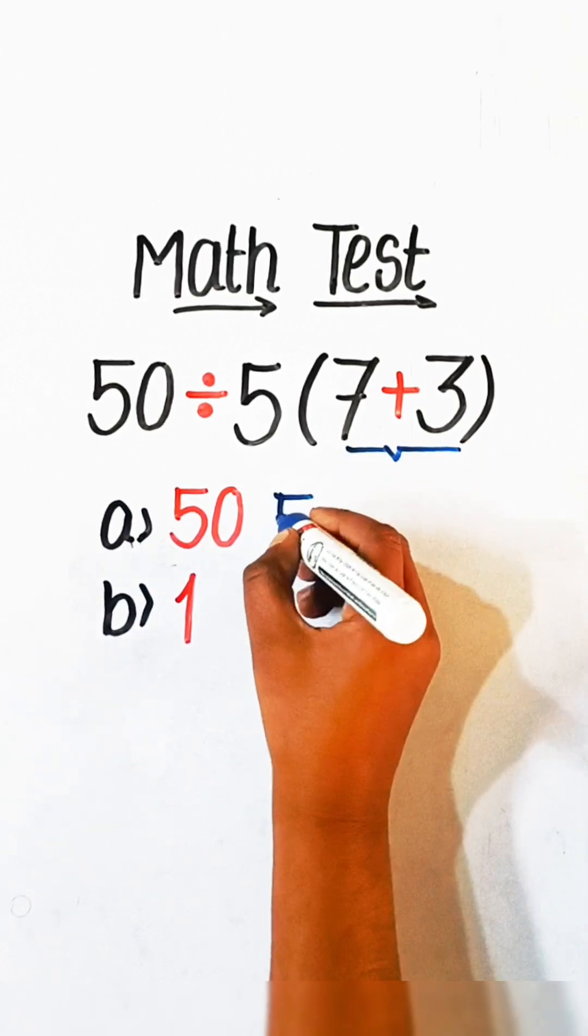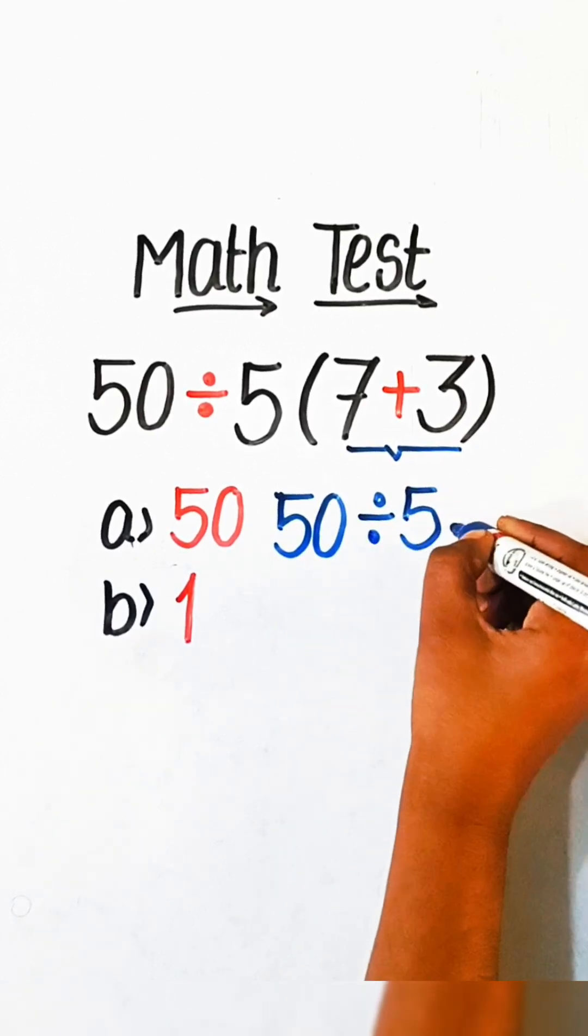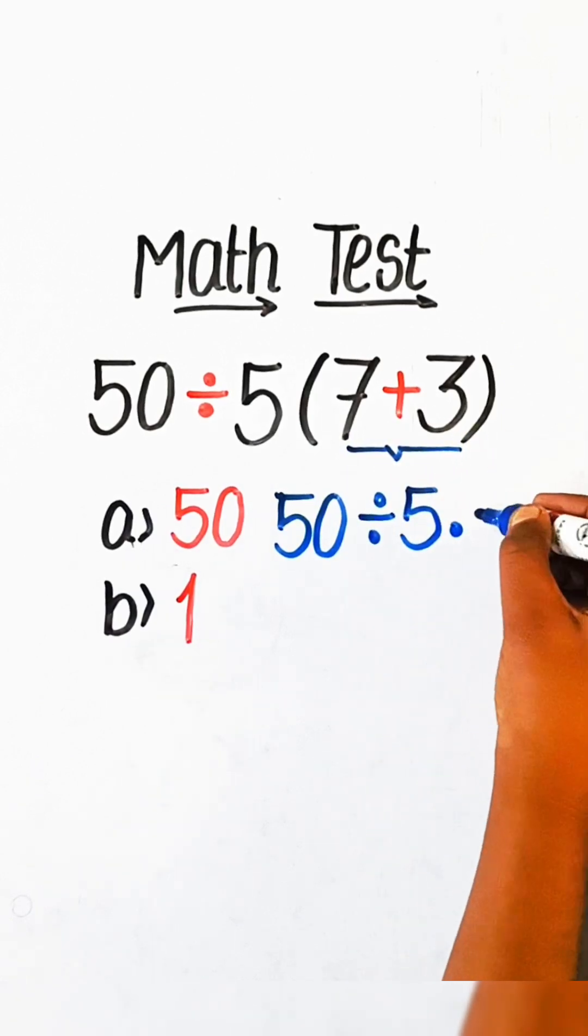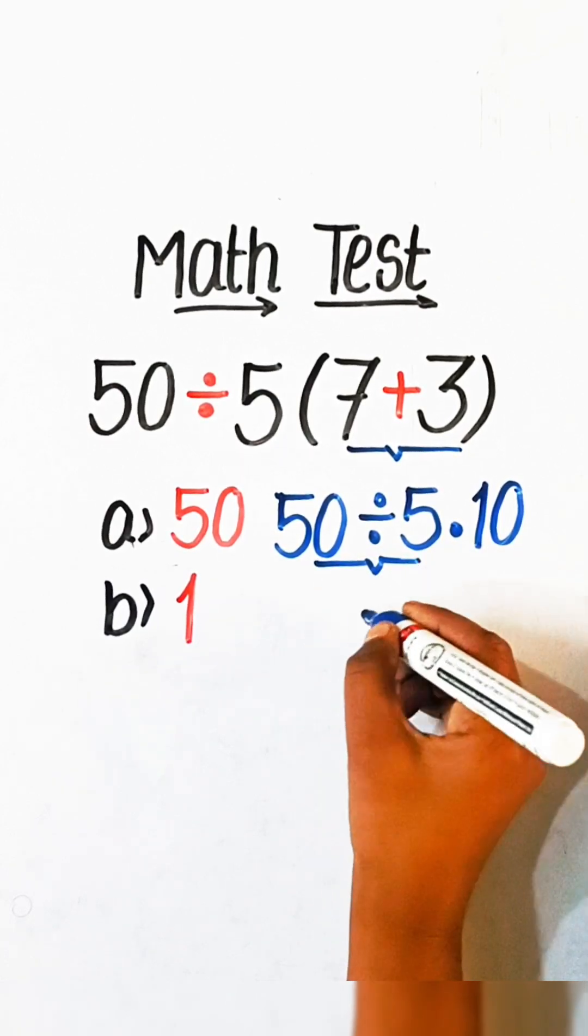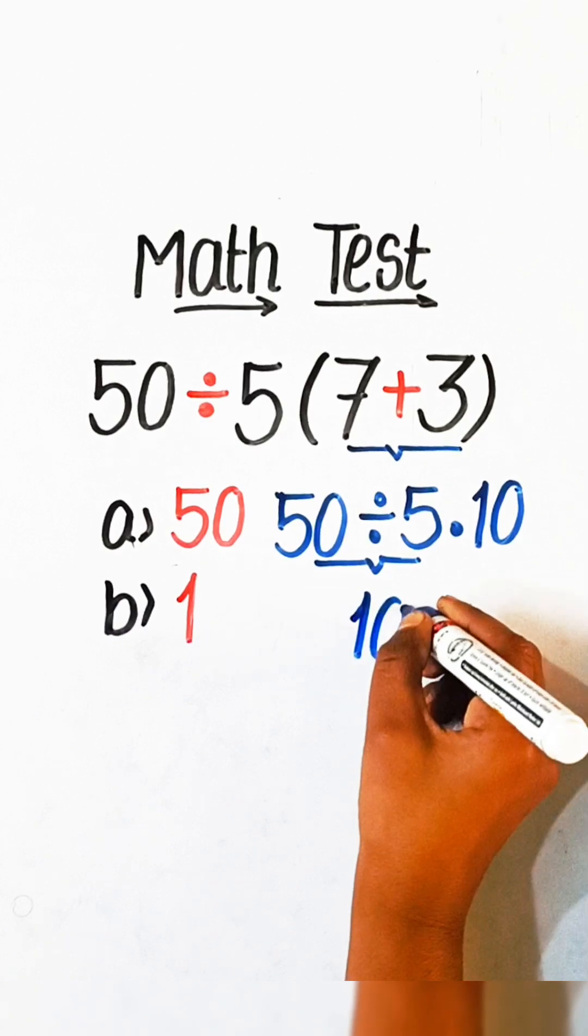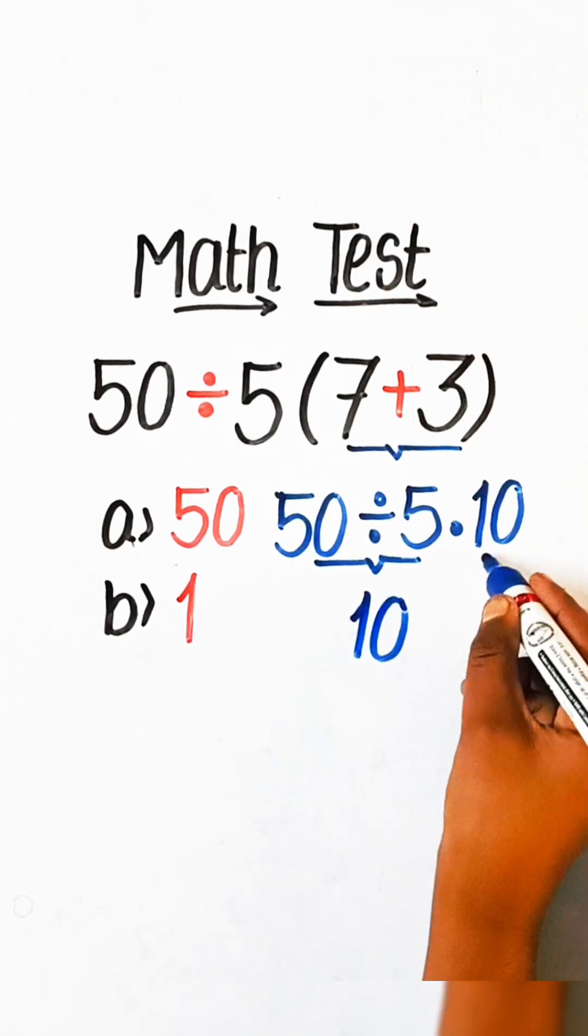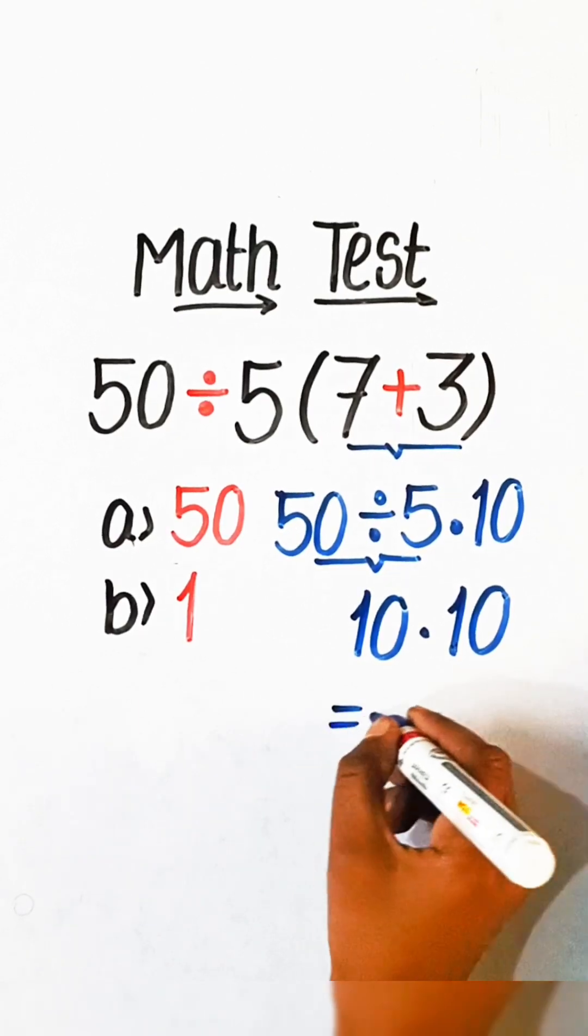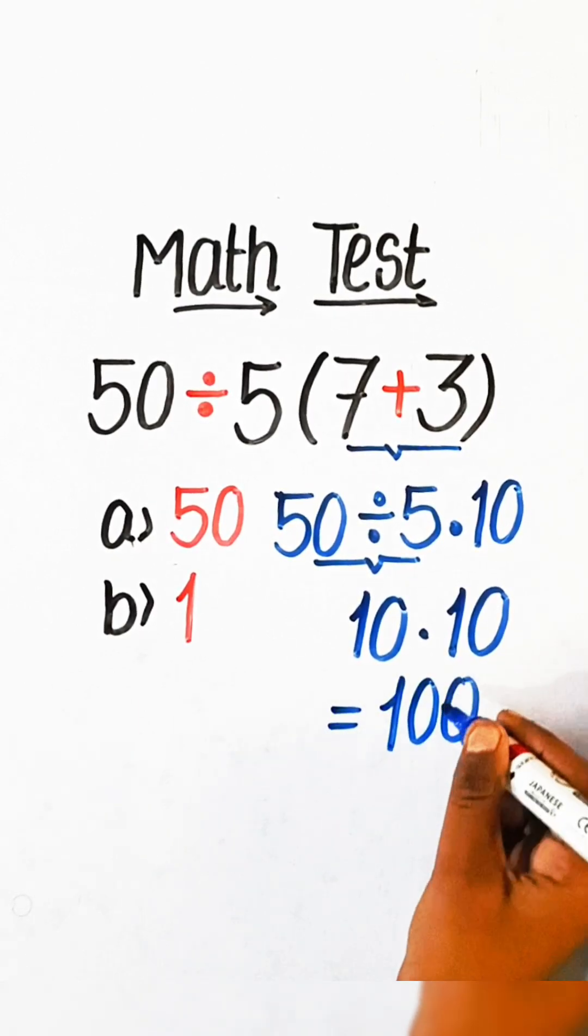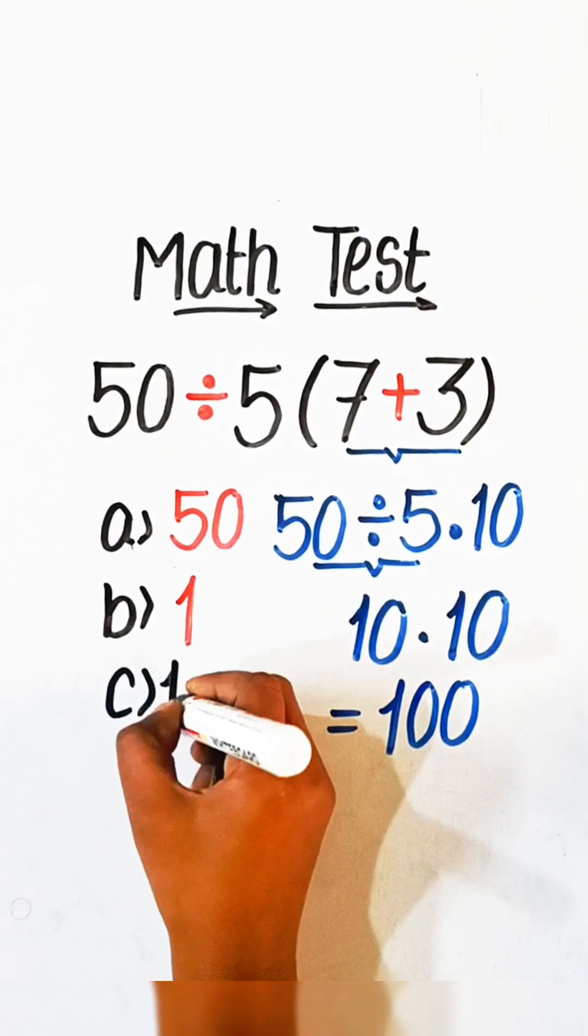We will write here 50 divided by 5 multiplied by 7 plus 3 is 10. 50 divided by 5 is 10, multiplied by 10 equals 100. So answer is option C, 100.